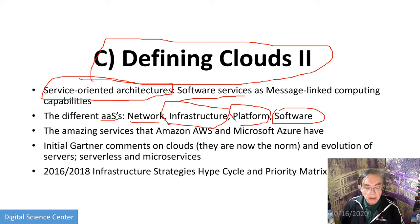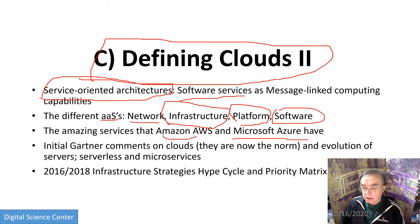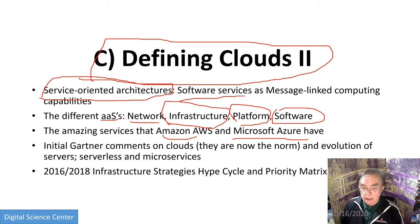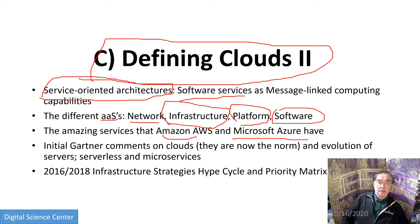We highlight that Amazon and Microsoft have an amazing number of services, which keep getting more and more. There are so many services that not only can't you keep track of what they offer, but nobody can compete. If you're a university computer center or even a digital science center, you can't offer anywhere near the number of services these providers have.